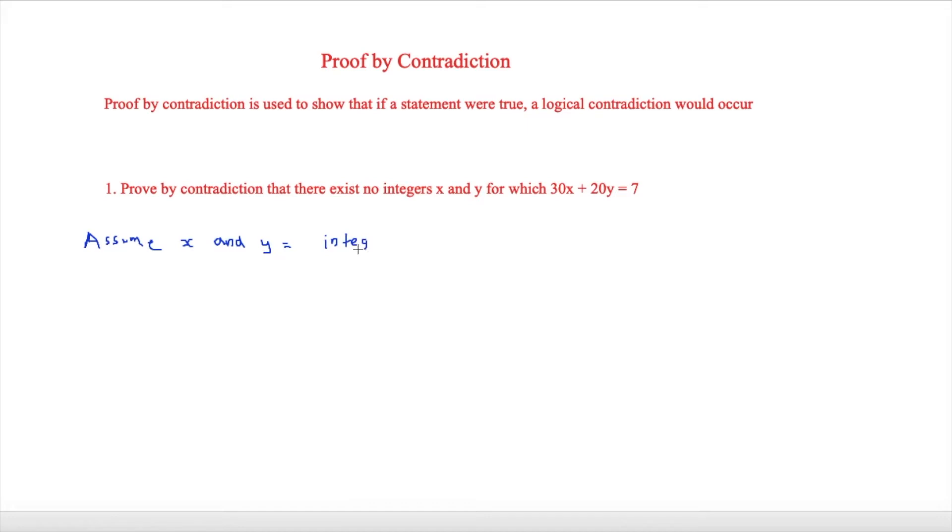Now we're going to look for a logical contradiction which would show that these cannot be integers. First we'll factorize this and we can take out a 10. So that would be 10(3x + 2y), and that equals 7.